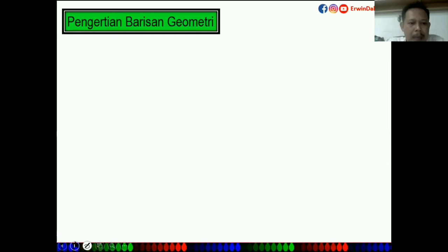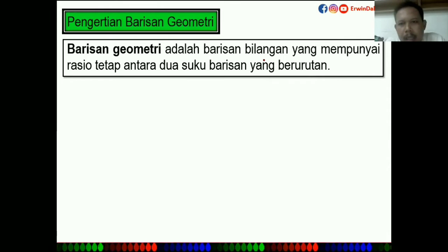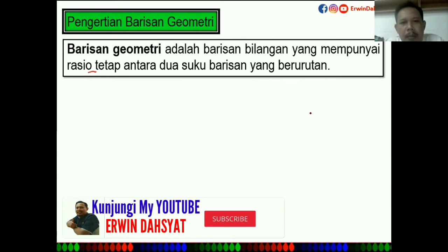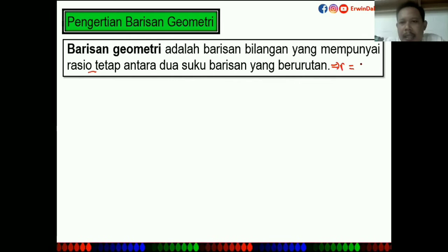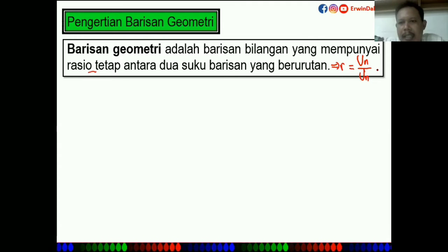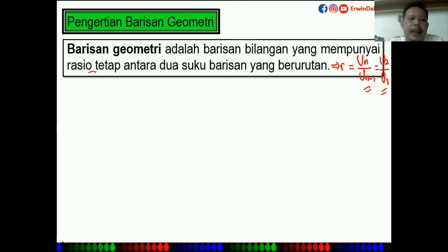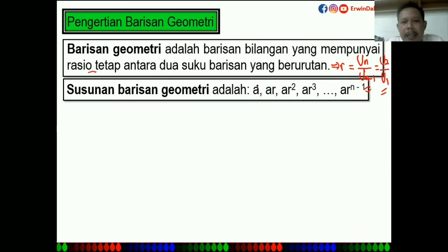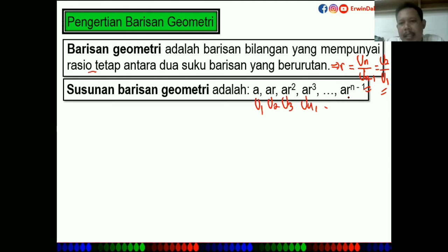Pengertian barisan geometri adalah barisan bilangan yang mempunyai rasio tetap antara dua suku barisan yang berurutan. Rasio ini berkaitan dengan pembagian, yaitu UN dibagi UN-1. Jika N sama dengan 2, berarti U2 dibagi U1. Secara umum, susunan barisan geometri: U1, U2, U3, U4, titik-titik, UN.